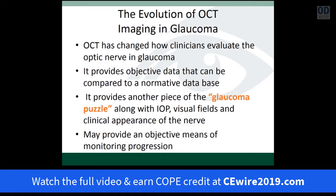What OCT has been able to do is allow us to provide objective data — to compare your nerve to a glaucoma nerve or to a normative database — to give you a clue: is this somebody you really need to worry about? It provides that other piece of the glaucoma puzzle, along with measuring pressure, doing visual fields, and the overall clinical examination of the optic nerve.